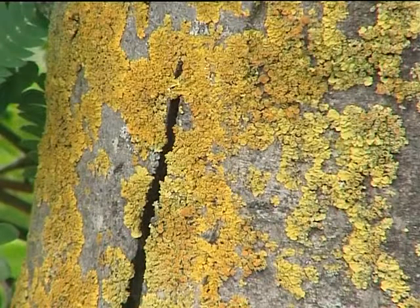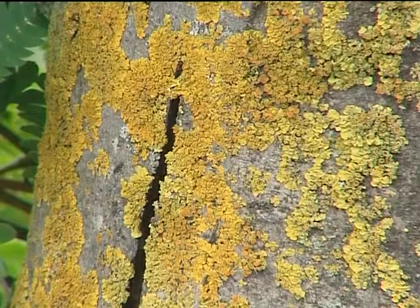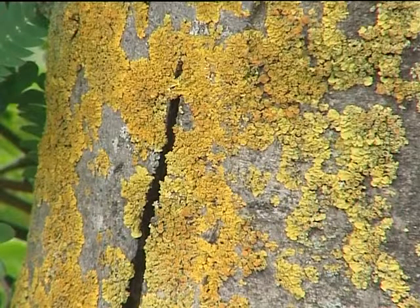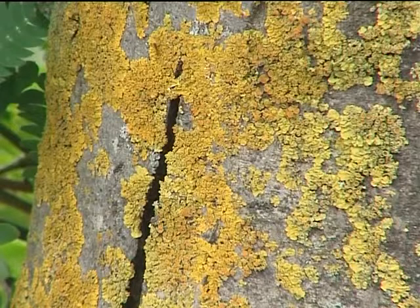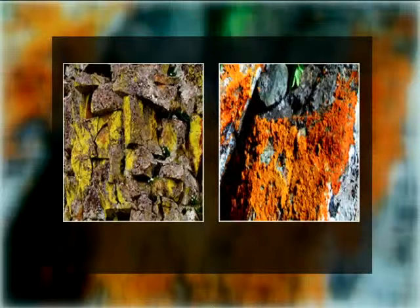Lichens occupy exposed habitats of high light intensity. Their fungal component or mycobiont often produces bright yellow, orange, or red colored compounds that help prevent damage to the lichen's photosynthetic apparatus. The mycobiont also produces distinct organic acids and other compounds that deter hungry animals and microbial attacks.